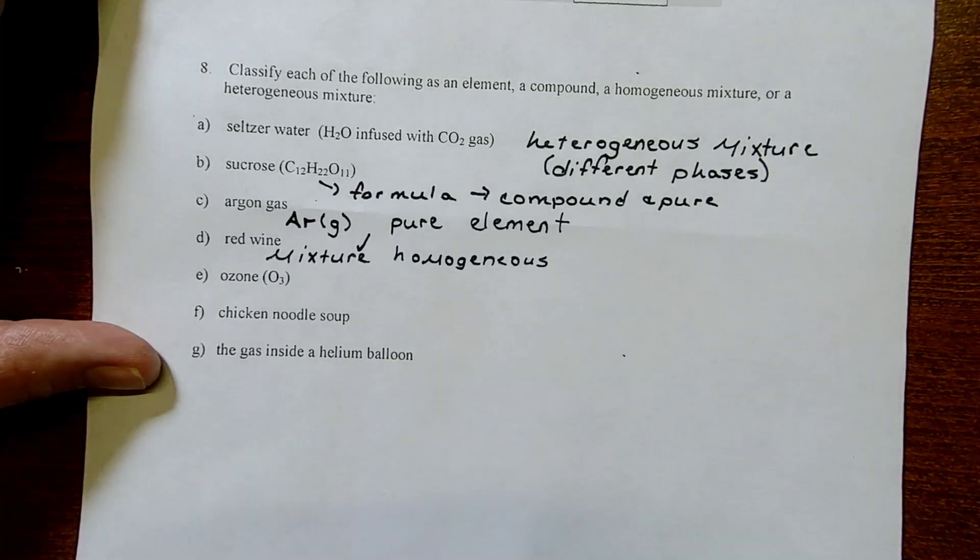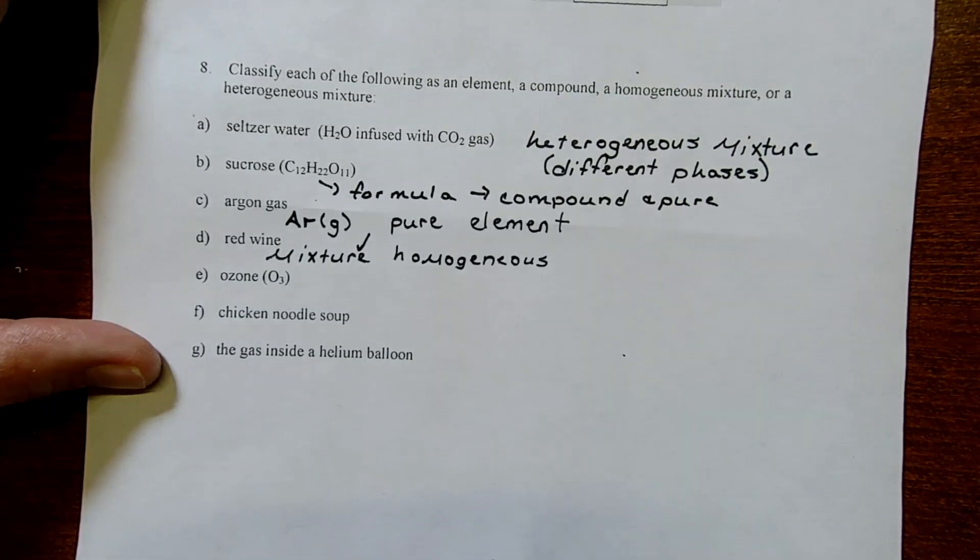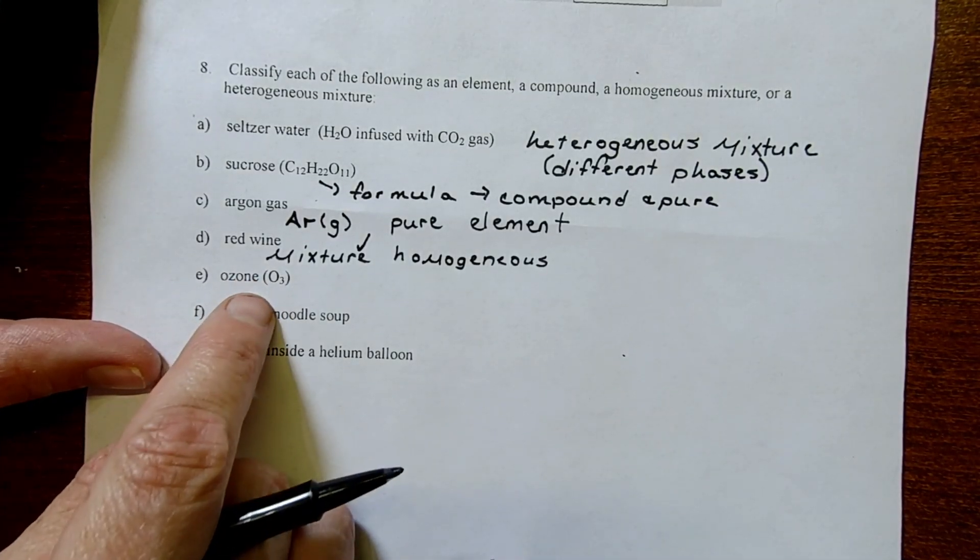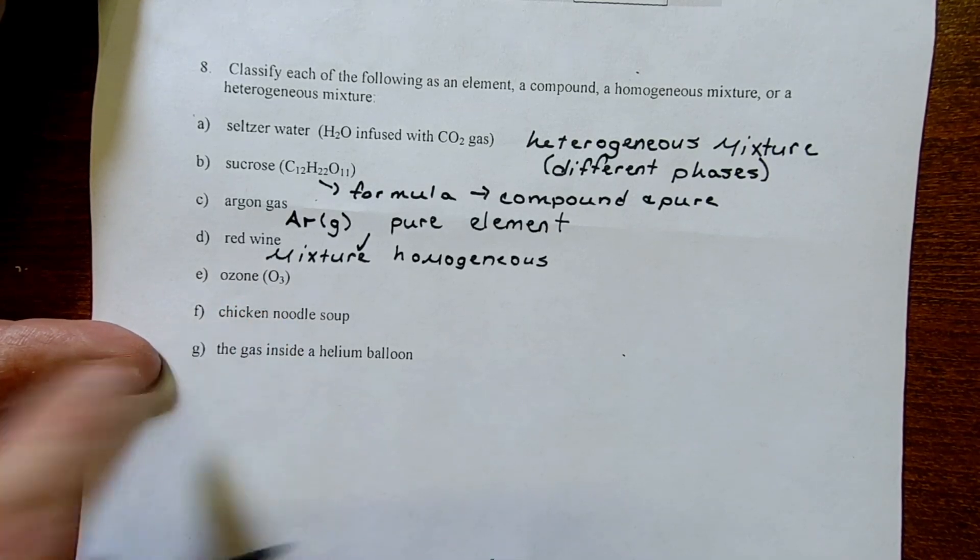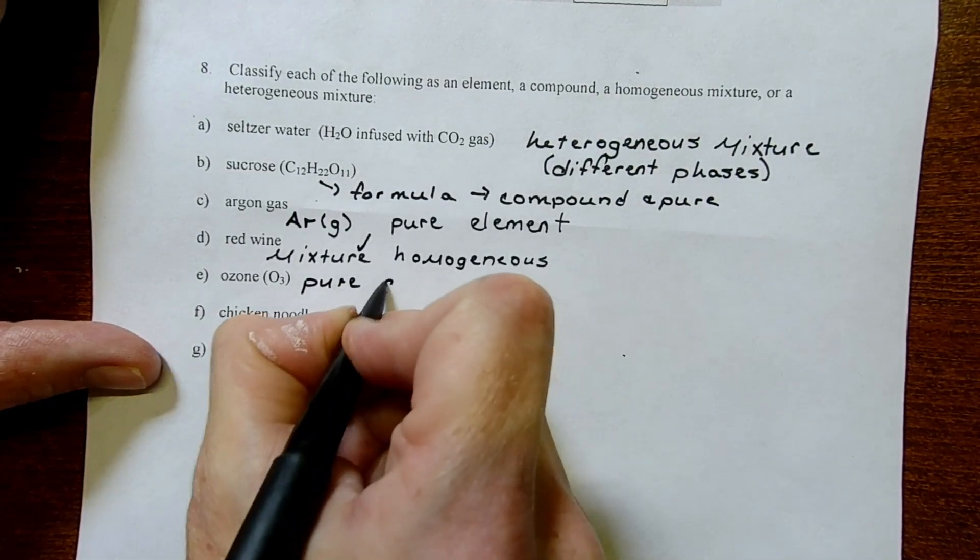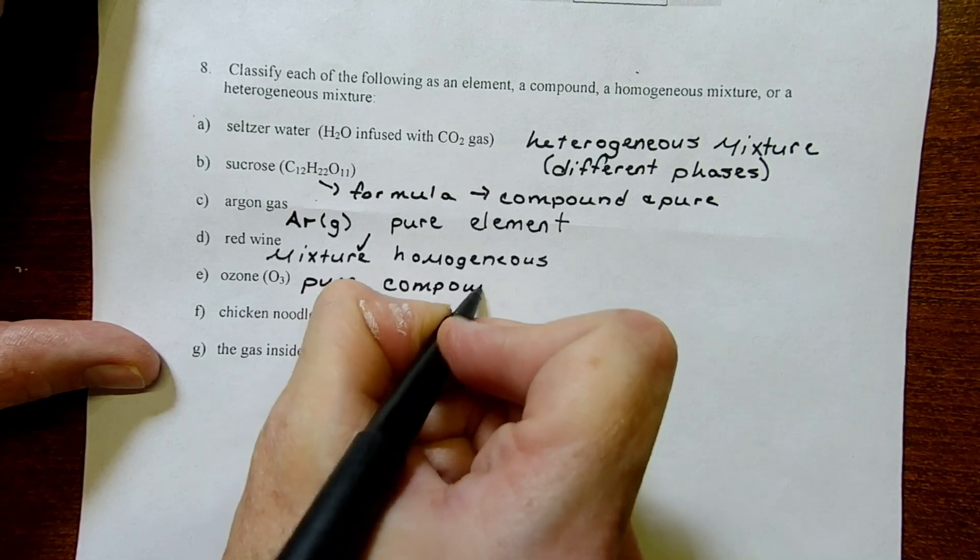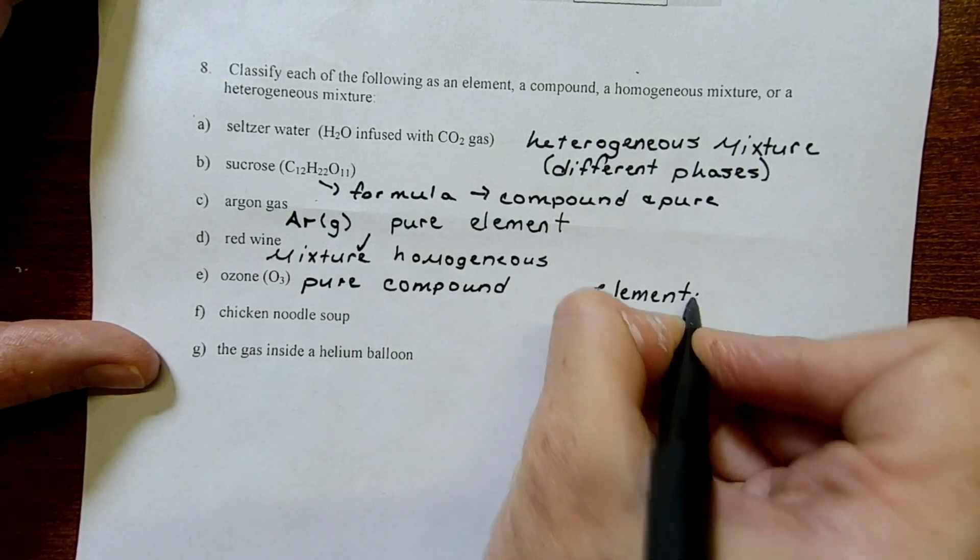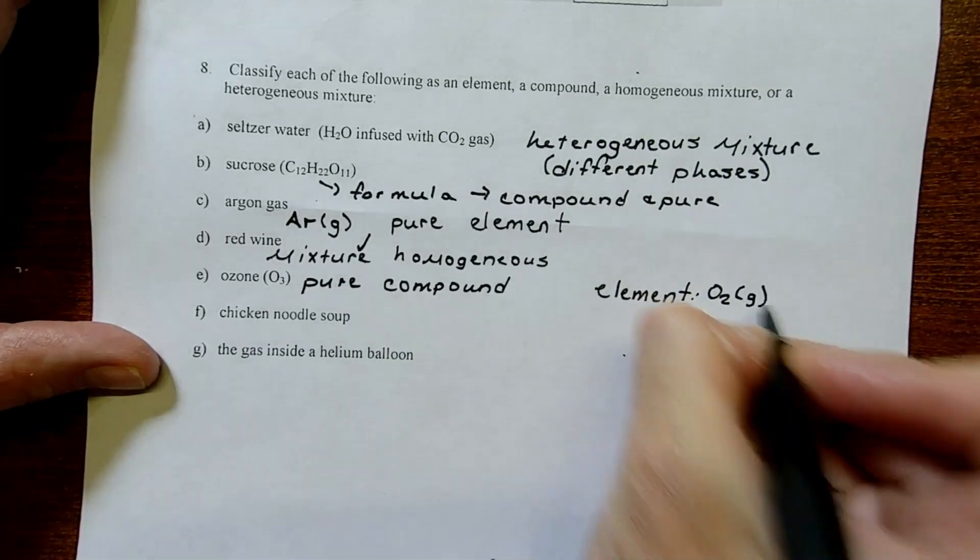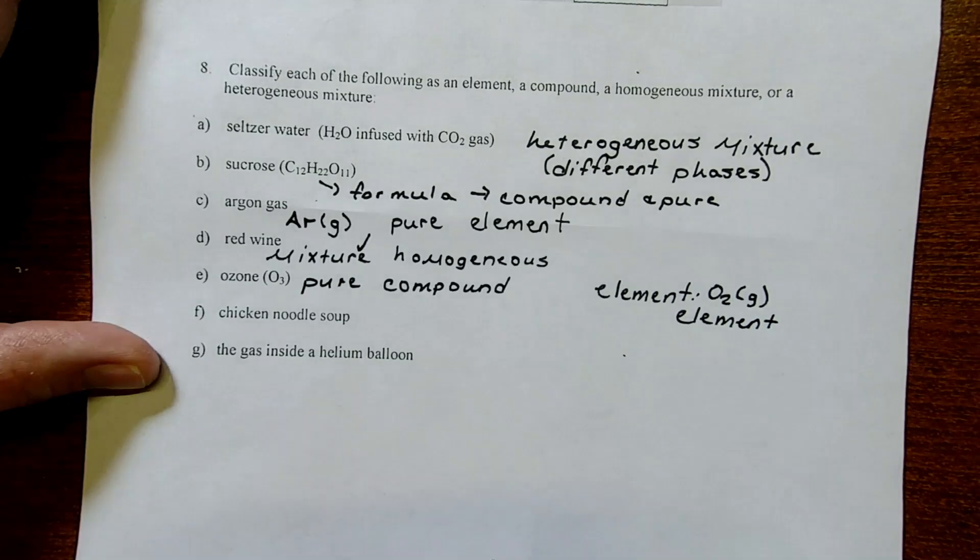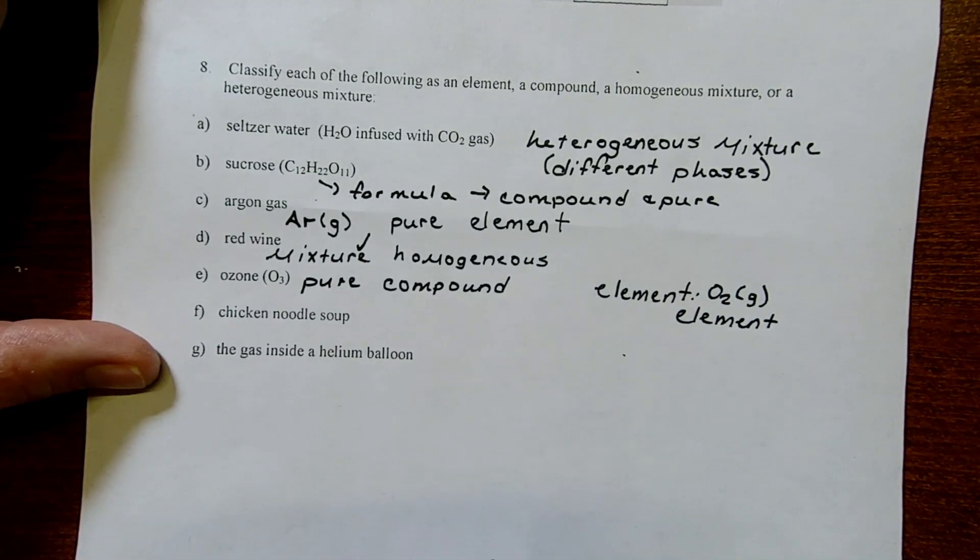Ozone. Ozone protects us from UV radiation from the sun when it's in the higher levels of the atmosphere. The big takeaway here is that we have a formula. It's O3. Some students have said, well, is that an element? It's not. It is pure, and it's a compound. The elemental form of oxygen is O2. Oxygen gas is how we expect to encounter elemental oxygen. Ozone is a different form, and it's not the elemental form. It's a pure compound.